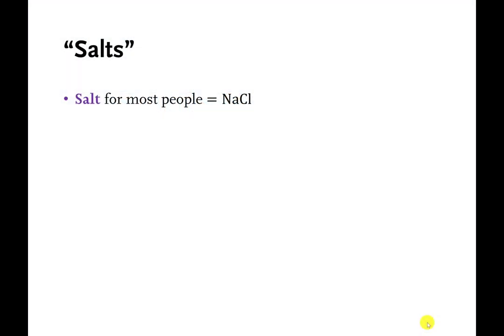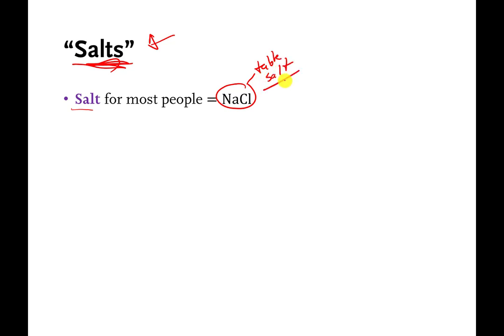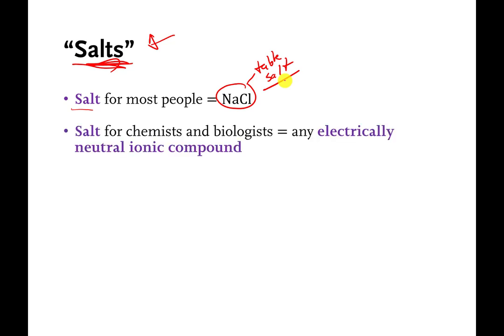A couple of new topics — this first one will be very brief. I'm going to talk about the word 'salt' or 'salts.' For most people on the planet, salt means table salt, NaCl or sodium chloride. But for chemists and biologists, table salt is just one kind of salt. So here's the chemistry definition: a salt is anything that's electrically neutral but is made of ions.